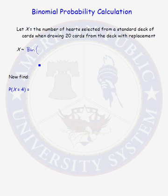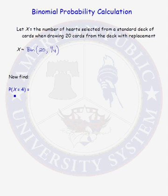So our random variable has a binomial distribution with 20 trials. The probability of success — the probability of drawing a heart — is 13 over 52, which is the same as 1/4. We want to calculate the probability that we will draw four hearts when selecting 20 cards from the deck.